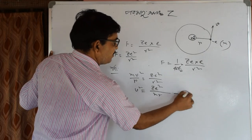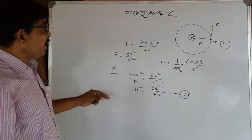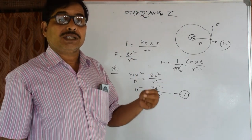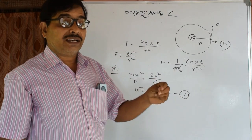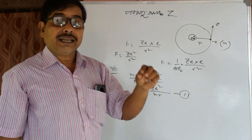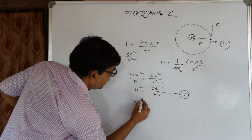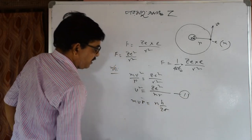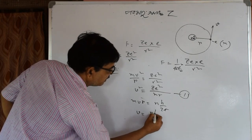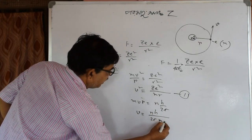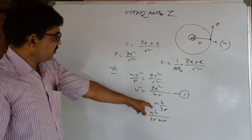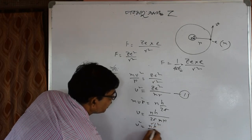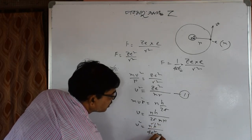Niels Bohr gave the quantum condition. He said the quantum condition is: mvr equals n times h by 2 pi. Look at this — n h by 2 pi divided by mr. That means v equals nh by 2 pi mr, and v squared equals n squared h squared divided by 4 pi squared m squared r squared.